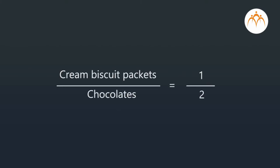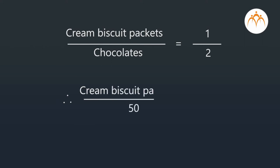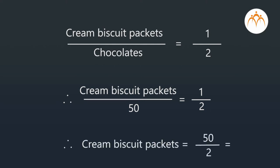Total chocolates that were given away are 140. This means that the remaining 50 chocolates were given free along with the cream biscuit packets. Since there is direct variation between cream biscuit packets and chocolates, we can say cream biscuit packets divided by chocolates, which is equal to 1 by 2, will be constant. Since 50 chocolates have been given free on cream biscuit packets, we solve: cream biscuit packets divided by 50 equals 1 by 2. We get cream biscuit packets equals 50 divided by 2, which is equal to 25. The shopkeeper sold 25 packets of cream biscuits that day.